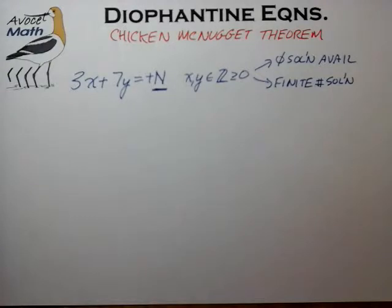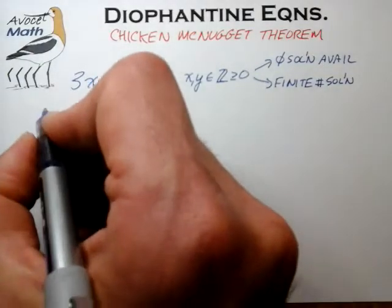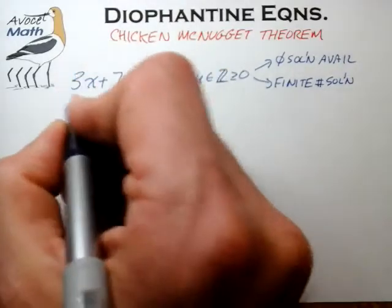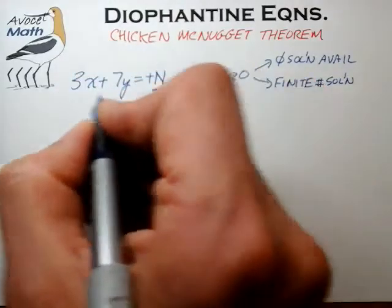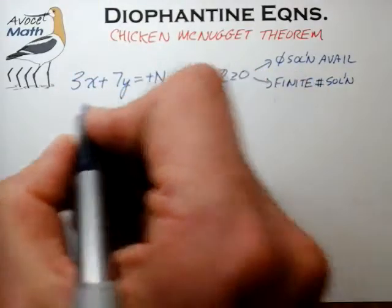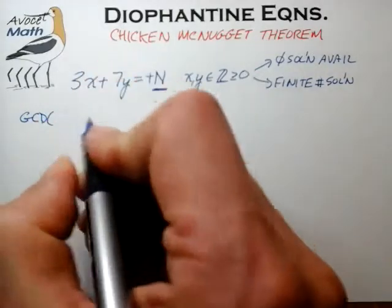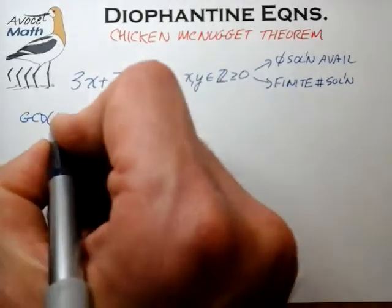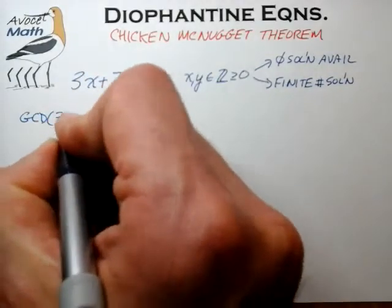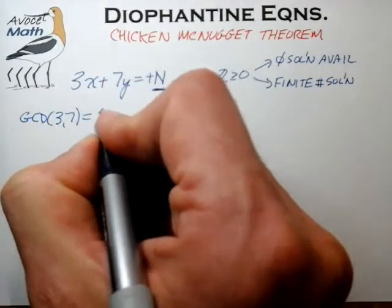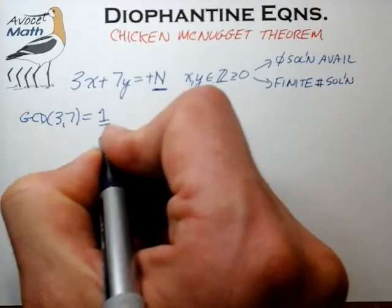To explore that further, we need to add one additional constraint. The constraint we're going to add is that we're going to consider only Diophantine equations in which the greatest common divisor of the coefficients is equal to 1.